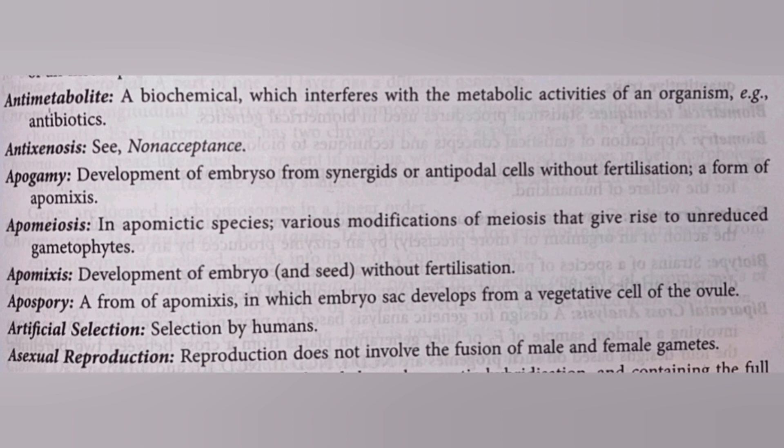Next one is artificial selection — that is selection by humans. The last one is asexual reproduction, where reproduction does not involve the fusion of male and female gametes.